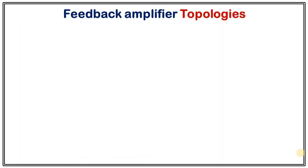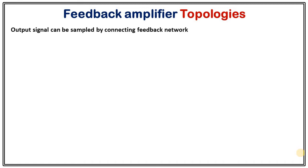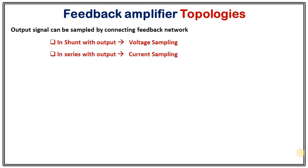In the last video we saw the concept of feedback amplifiers — that a certain portion of the output voltage or output signal is taken and fed back to the input terminal. The question is: what are the different ways to sample the output signal? The output signal can be sampled by connecting the feedback network in two different configurations: in shunt configuration with the output, which we call voltage sampling, or in series with the output, which we call current sampling.